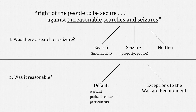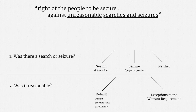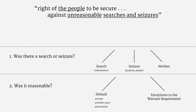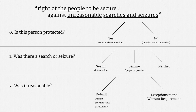Let me integrate the substantial connection test into our diagram of the Fourth Amendment. The Supreme Court emphasized that the Fourth Amendment applies to 'the people,' and it vindicated that language by adding a new step. Before getting to whether there was a search or seizure, and before getting to reasonableness, you now have to ask: is this person protected by the Fourth Amendment? The answer is yes if the person has a substantial connection to the United States, whatever that means. The answer is no if the person has no substantial connection. So that's how Verdugo-Urquidez changed the Fourth Amendment.